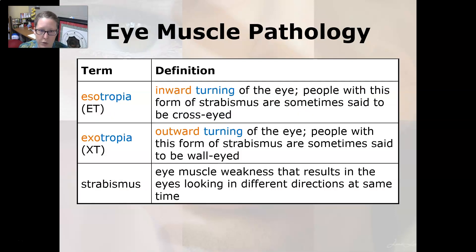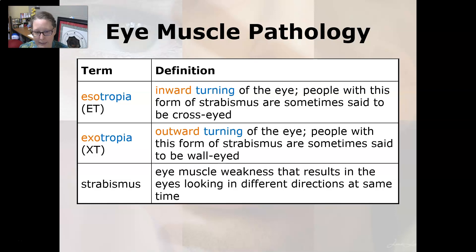In eye muscle pathology, esotropia is an inward turning of the eye; people with this form of strabismus are sometimes said to be cross-eyed. Exotropia is an outward turning of the eye; people with this form of strabismus are sometimes said to be wall-eyed. Strabismus is eye muscle weakness that results in the eyes looking in different directions at the same time.